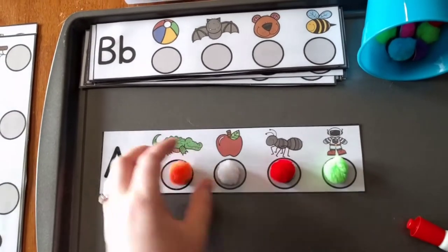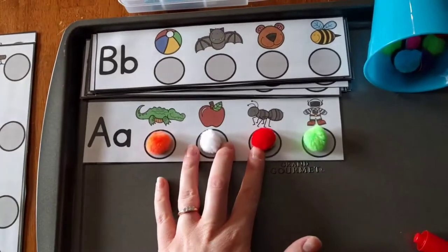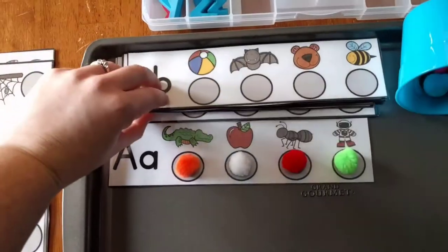So that's one way to use their finger, another way is to use pom-poms with magnets. And so I have for every letter of the alphabet they can do the different sounds.